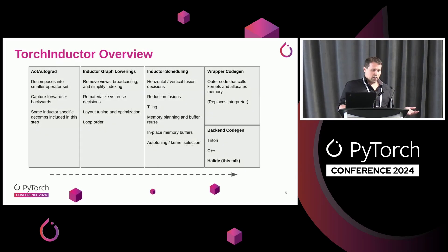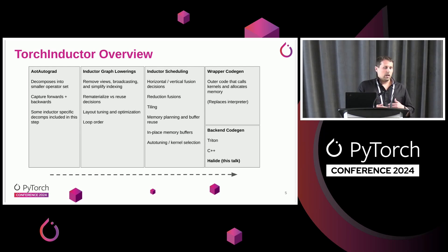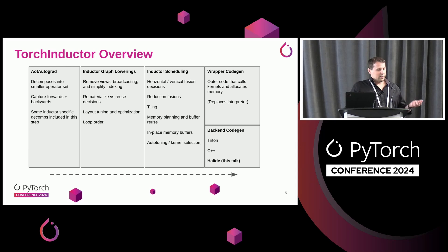I've talked about Torch Inductor at past PyTorch conferences, so I'm not going to go into a lot of detail here. But the basic idea is there's a progressive lowering process where we compile the program, we do a lot of graph-level optimizations. And then in the backend, we have code generation for previously two different backends: Triton and C++. And this talk is about a third backend that we recently added in trunk, which is Halide.